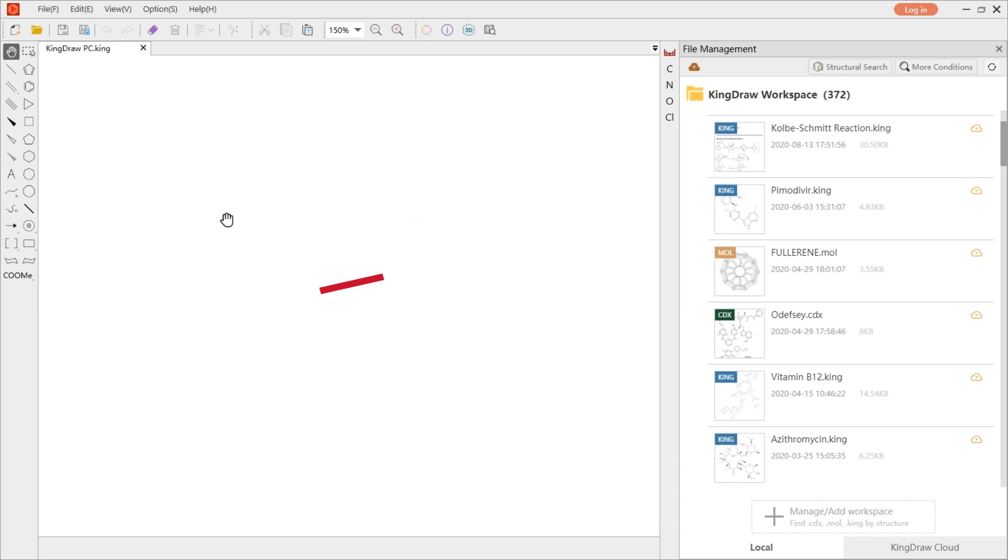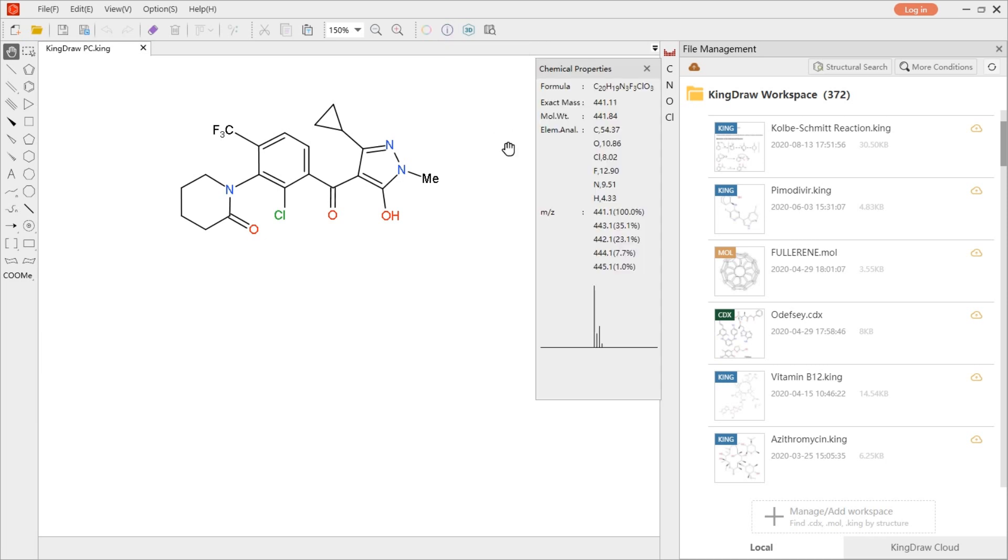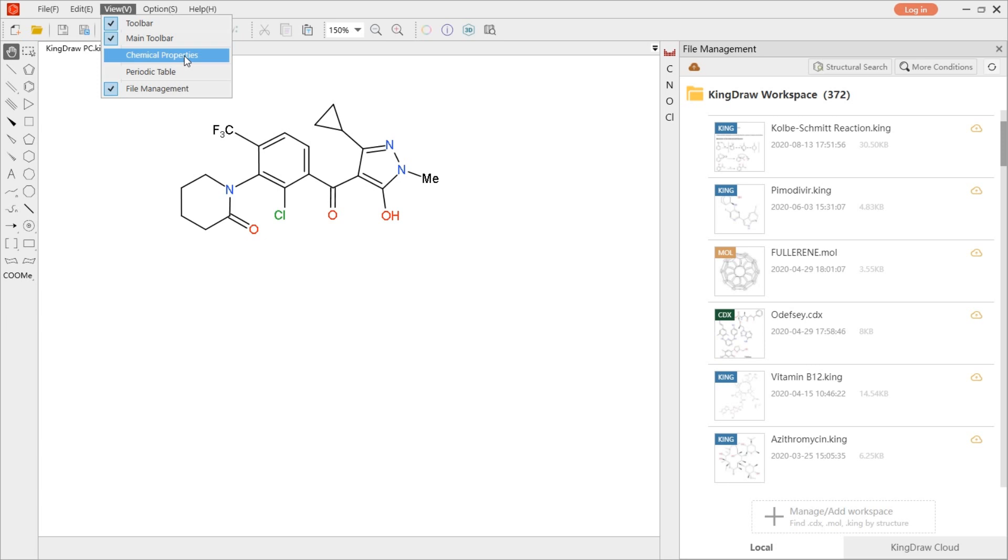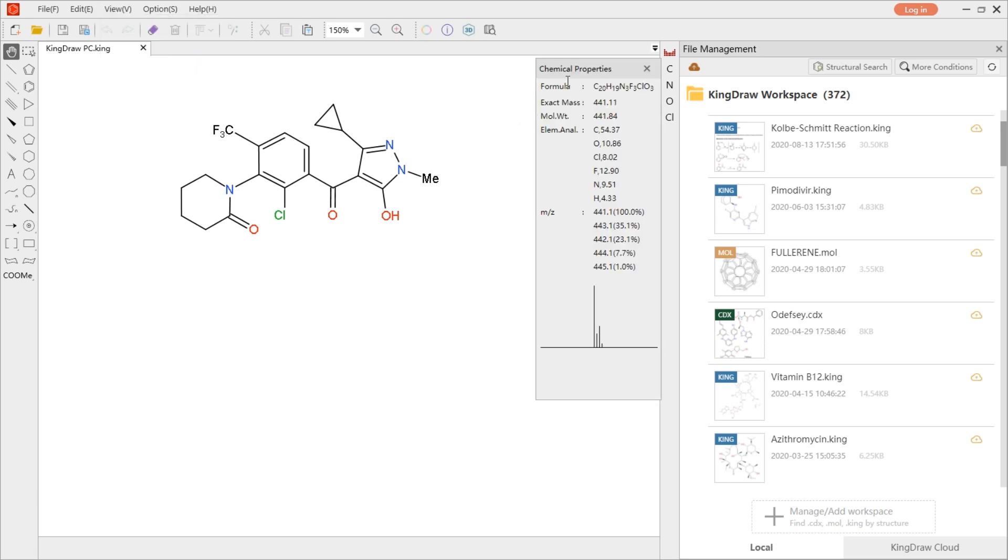For convenience, Kindle provides a one-click view of chemical properties. You can click the chemical properties button in the top toolbar or click the chemical properties in the view menu to open the window. It can be moved at view.